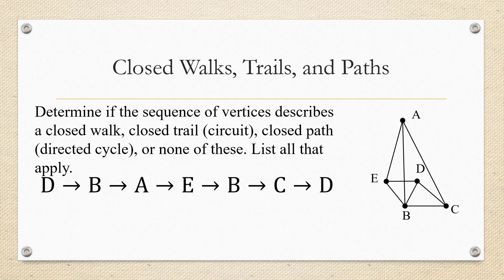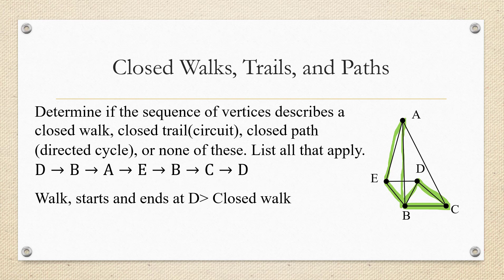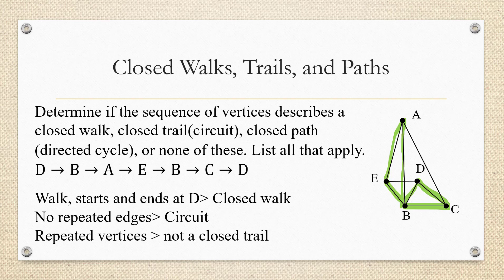Let's look at D to B to A to E to B to C to D. Tracing it: D to B, up to A, down to E, back to B, then to C, then to D. This is a walk that begins and ends at D, so it's a closed walk. Checking for repeated edges — none — so this is also a closed trail or circuit. But checking vertices, it visits vertex B twice, so it's not a closed path or directed cycle. Final answer: closed walk and circuit, but not a closed path.